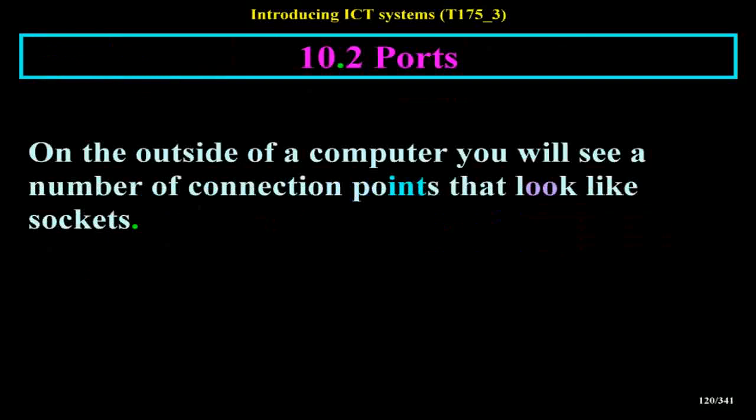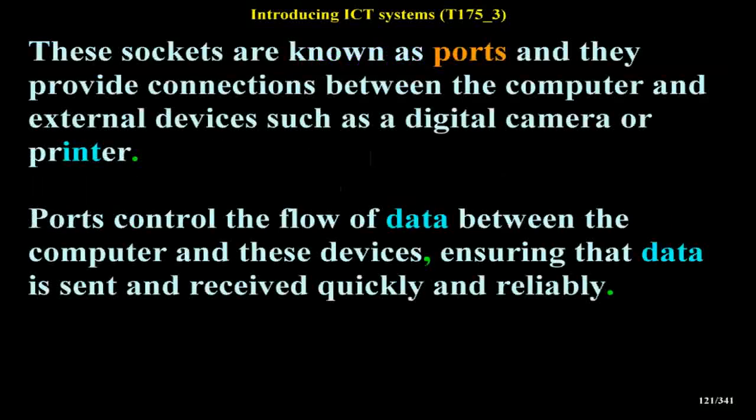Ports: on the outside of a computer you will see a number of connection points that look like sockets. These sockets are known as ports and they provide connections between the computer and external devices such as a digital camera or printer. Ports control the flow of data between the computer and these devices, ensuring that data is sent and received quickly and reliably.